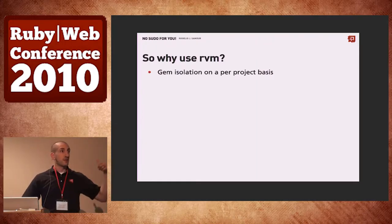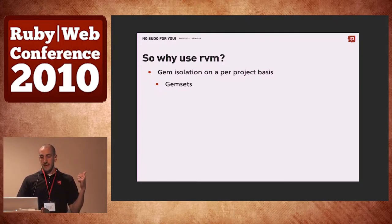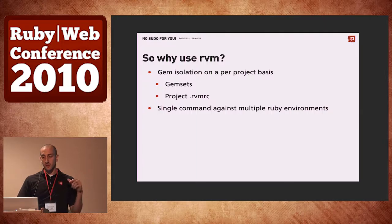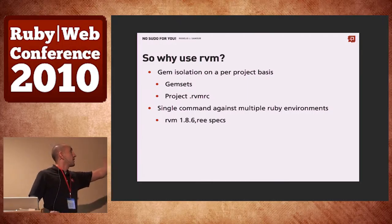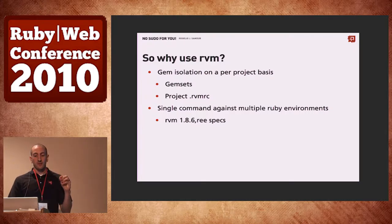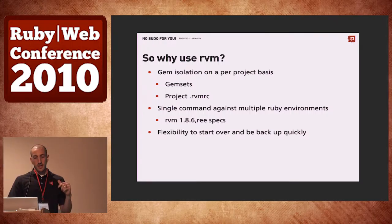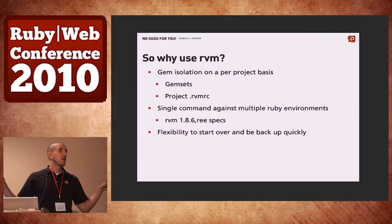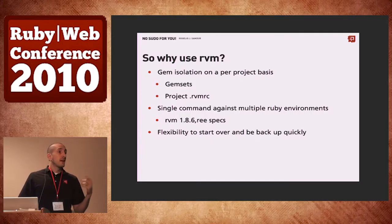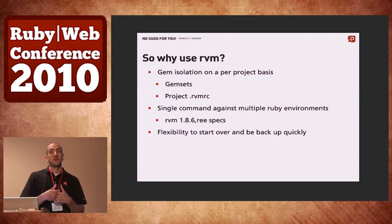So why use RVM? Gem isolation — that's crazy to have all these gems in one big pot. Gemsets, again — per-project .rvmrc, which I'll show you in a second. A single command to run — for instance, this will run your specs for Ruby 1.8.6 and REE. You can even tell it to run not only per Ruby version but for a specific gemset. And the flexibility to start over and be back up quickly. Last night something went wrong with my environment — all I did was run rvm implode, it deleted my .rvm, and I was back up again.